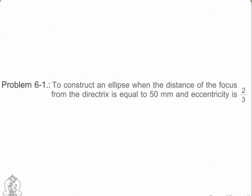General Method of Construction of an Ellipse. Problem 6.1: To construct an ellipse when the distance of the focus from the directrix is equal to 50mm and eccentricity is 2 by 3.